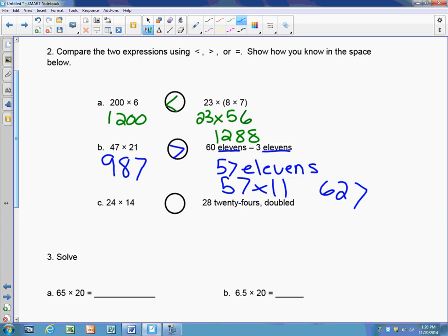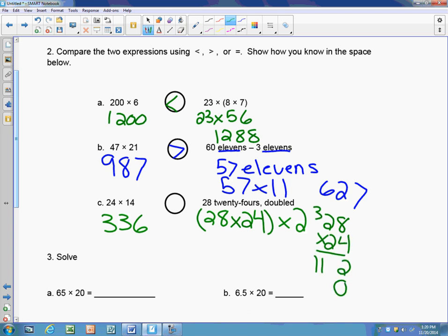Now the next problem, it's 24 times 14, and 24 times 14 is 336. And then over here I have 28 twenty-fours, which means 28 times 24. And doubling something means to multiply it by 2. So 28 times 24, I would have to solve first. 28 times 24, we end up with 672. And 672 doubled, since we already have a number that's larger than here, I know I don't have to multiply it by 2 because I already know that that's larger.